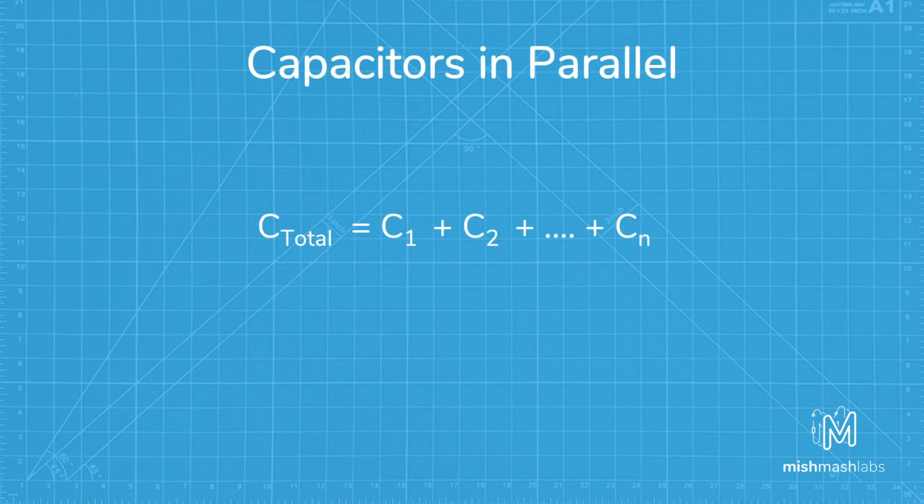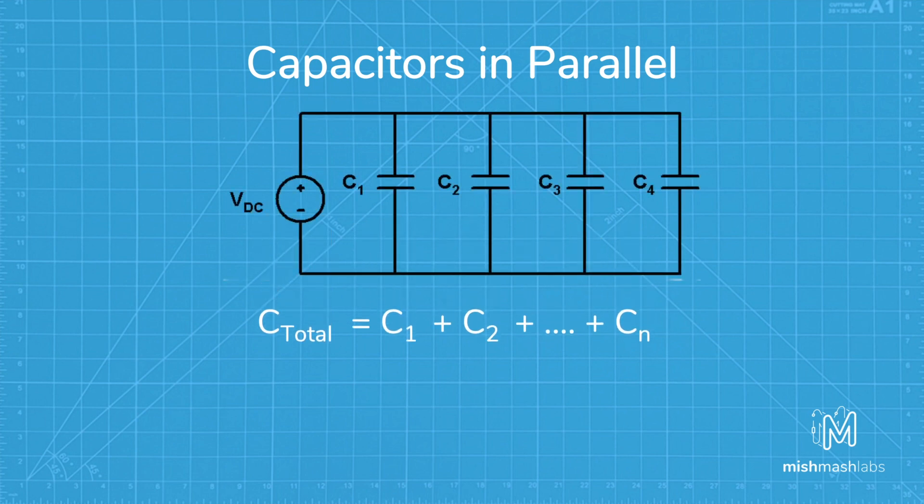Adding capacitors in parallel is similar to resistors in series. The capacitance is simply the sum of all capacitance together. In this example we'll use four parallel capacitors, a 10 microfarad, 5 microfarad, 2 microfarad and single microfarad. You simply add them together, giving you 18 microfarads.